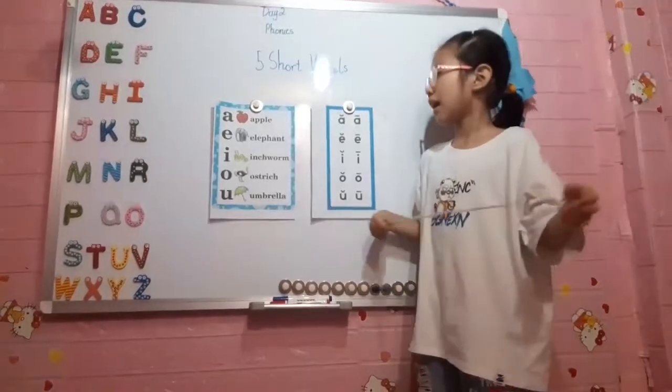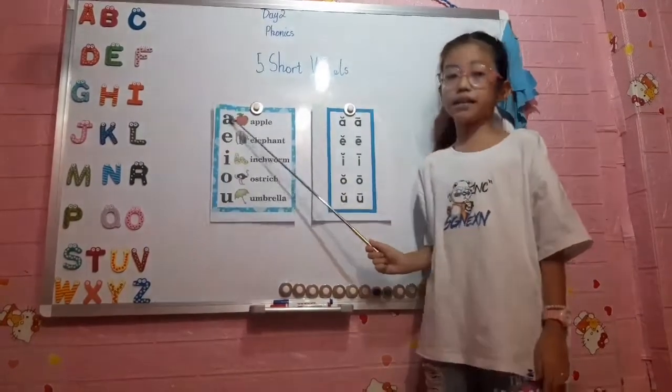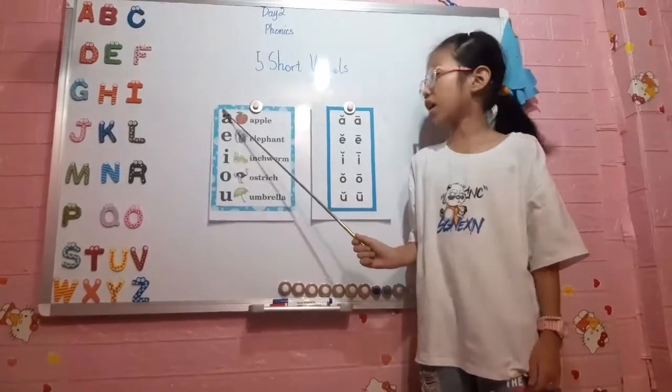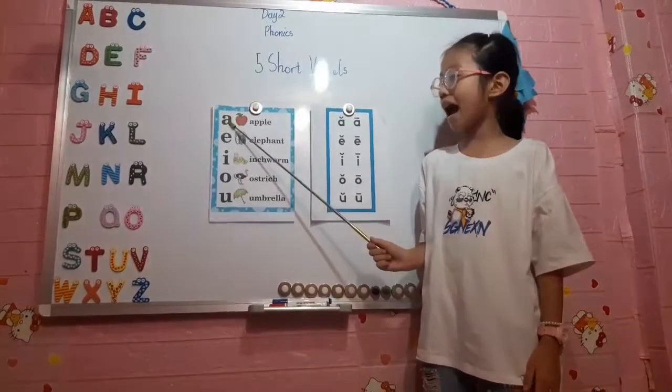Now, A said A as an apple short. A said A, A, A.